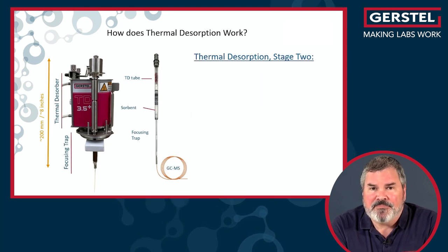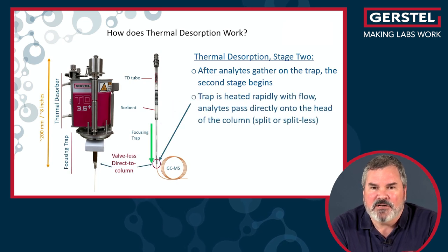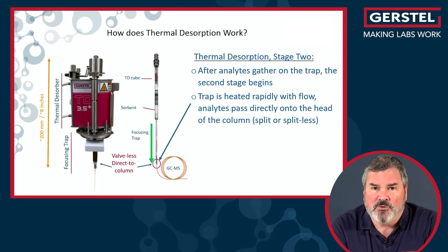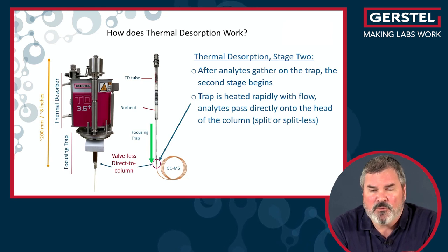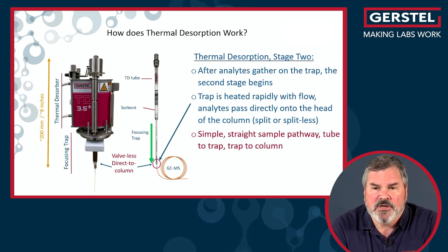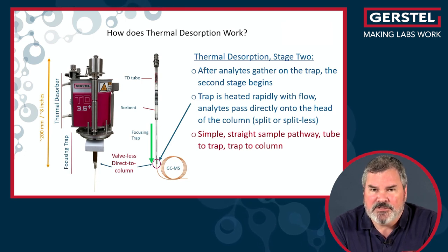Once things are on the trap, we go into stage two, which looks a lot like stage one. After the analytes gather on the trap, the second stage begins. The trap is now heated very rapidly and everything passes directly to the head of the column — again, either split or splitless. You can run splitless for the highest sensitivity possible, or run a high split twice. You can get a 40,000-to-one split ratio or higher, giving a wide dynamic range. Most importantly, this approach is simple — a straight sample pathway: tube to trap, trap to column. Very simple to understand, diagnose, and troubleshoot.